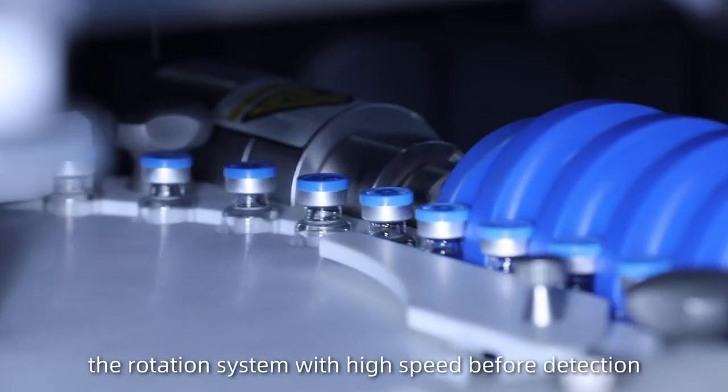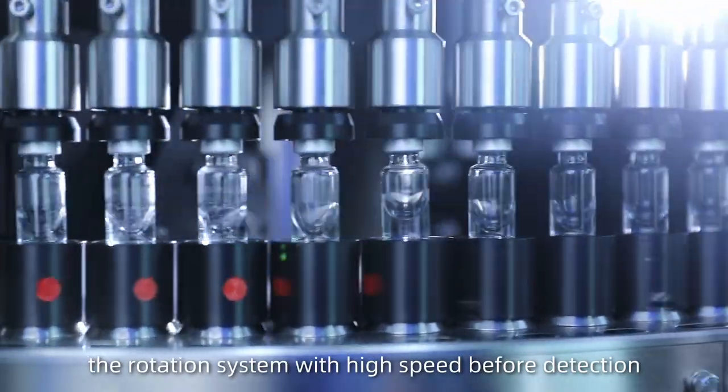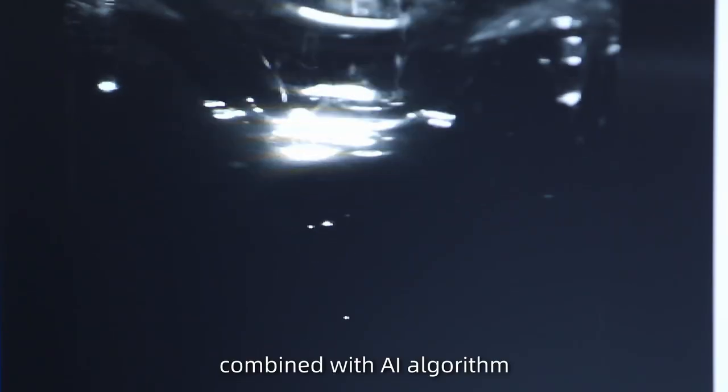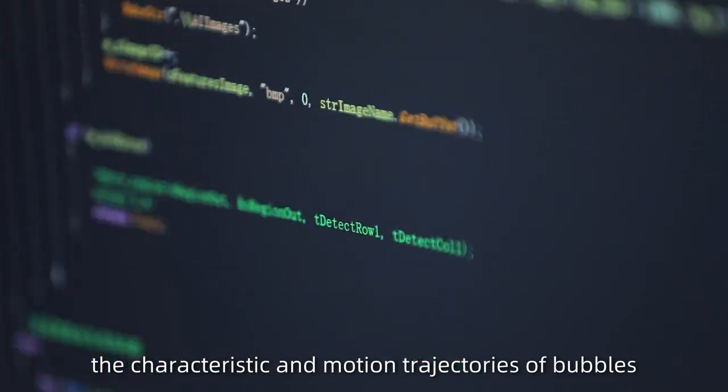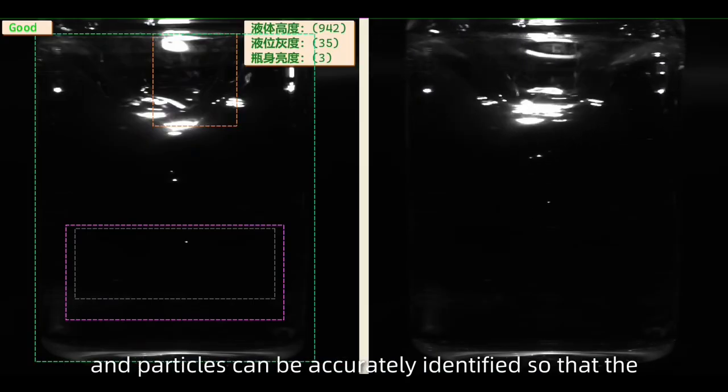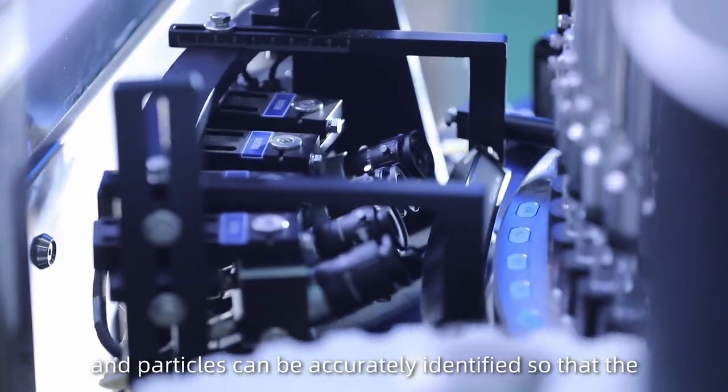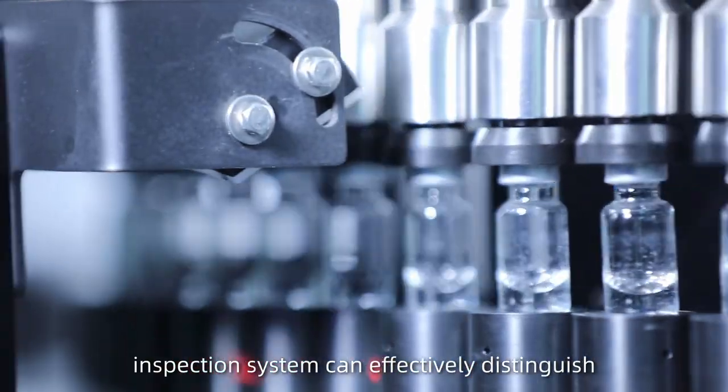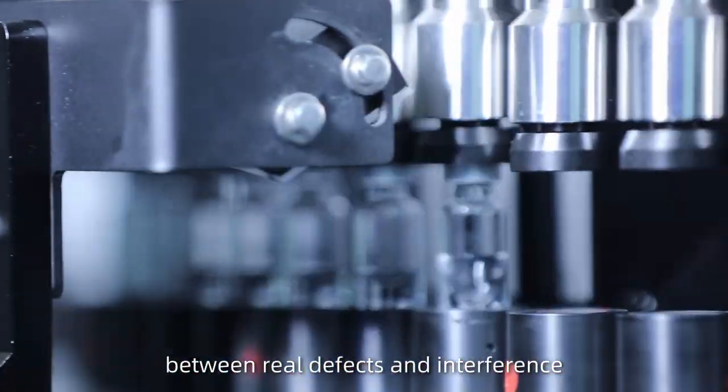At the same time, the rotation system with high speed before detection can reduce bubbles. Combined with the AI algorithm, the characteristics and motion trajectories of bubbles and particles can be accurately identified so that the inspection system can effectively distinguish between real defects and interference.